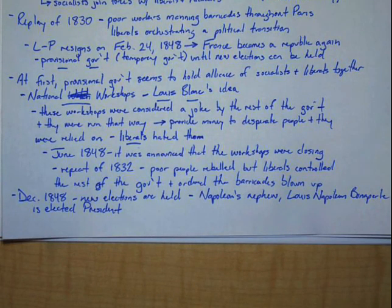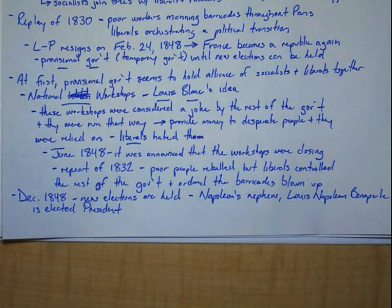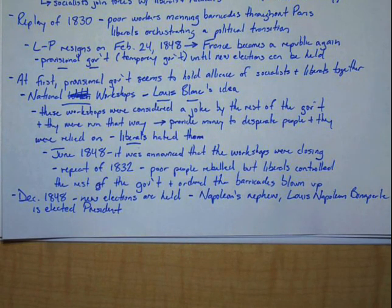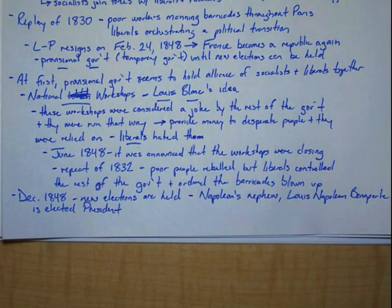So, this is the French Revolution of 1848. In our next video, we will talk about what's going on in Austria and all the little Germanys in 1848. Until then, this is Mr. Nissen signing off.